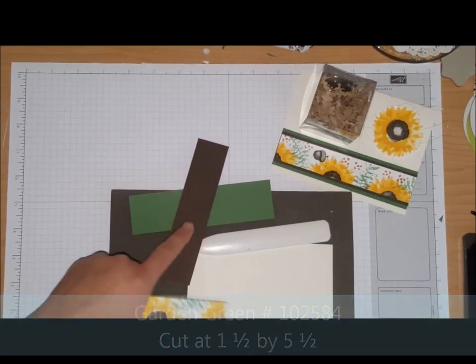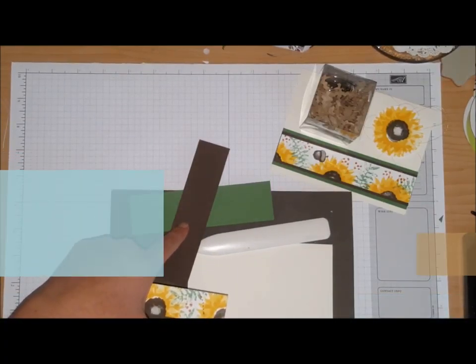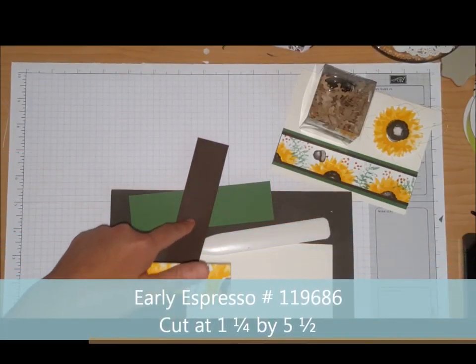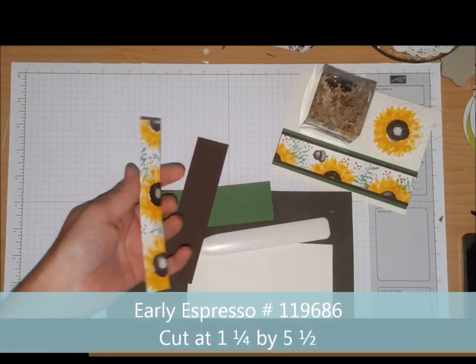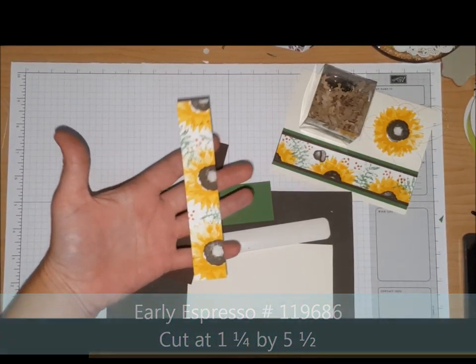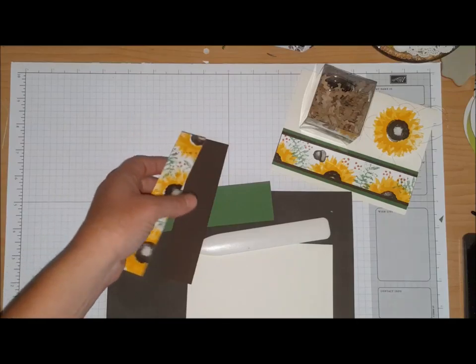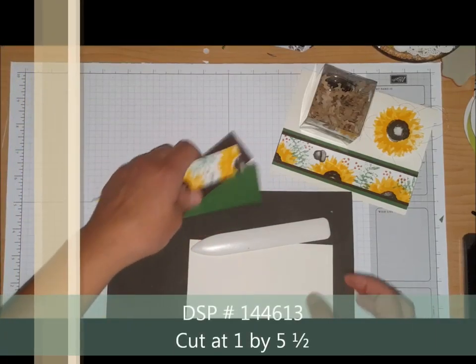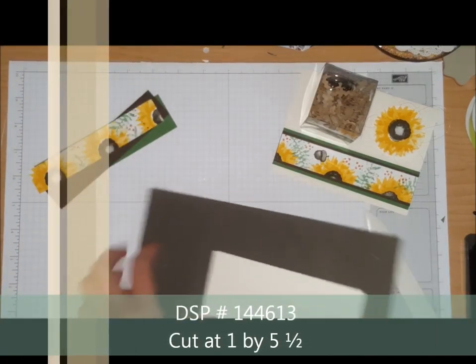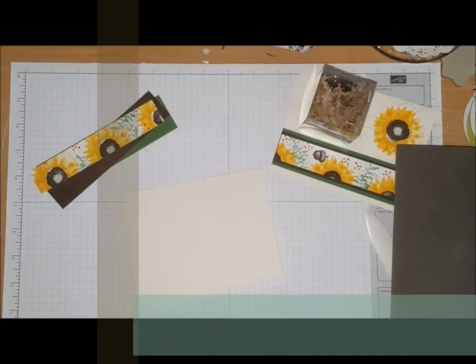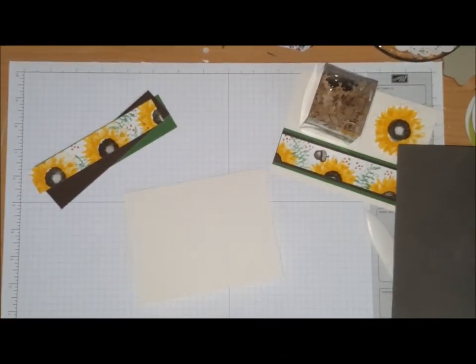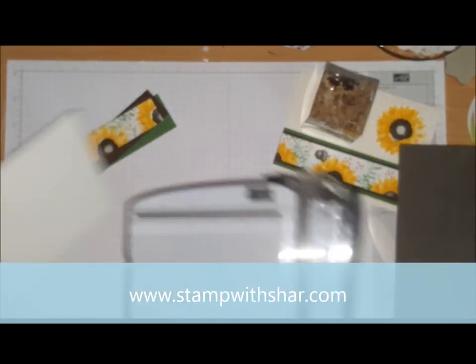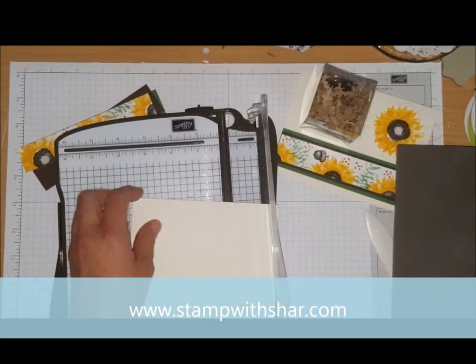The next piece is Early Espresso and this is cut at one and a quarter by five and a half, and then the designer series paper is cut at one by five and a half. Again all these measurements will be over on my website at www.stampwithshar.com.